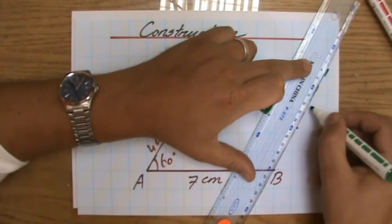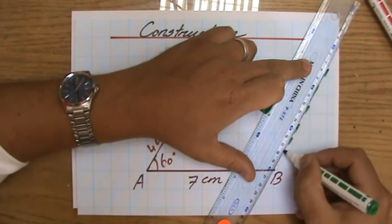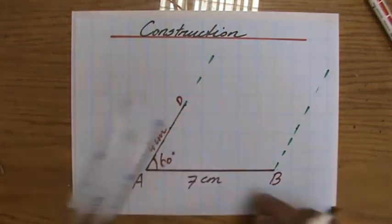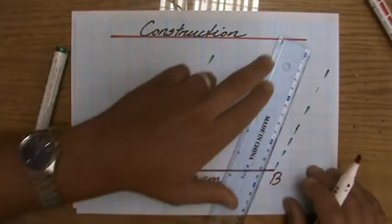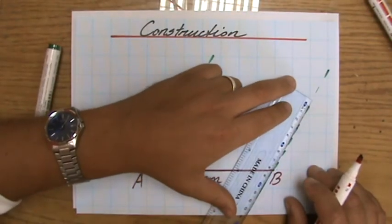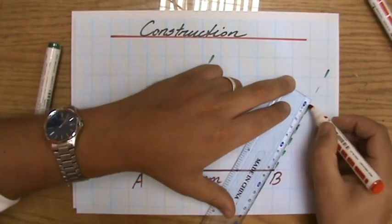Then I realize that point C should be how many centimeters away from point B? That's going to be 4 centimeters. Fantastic. I'm going to again measure 4 centimeters. Here we go. Beautiful.